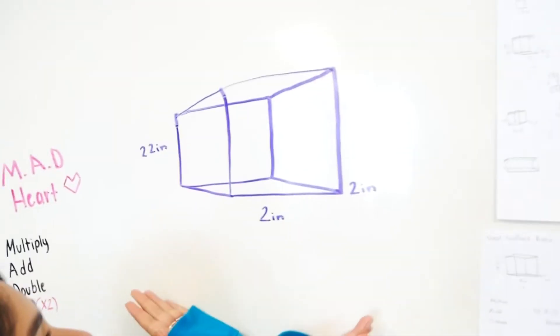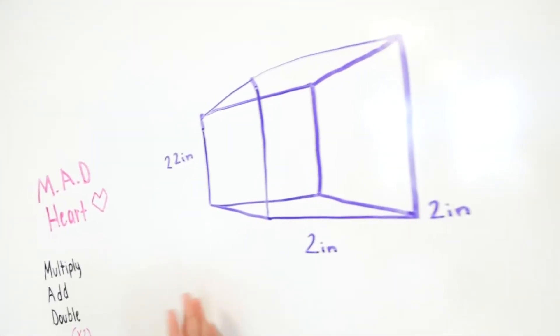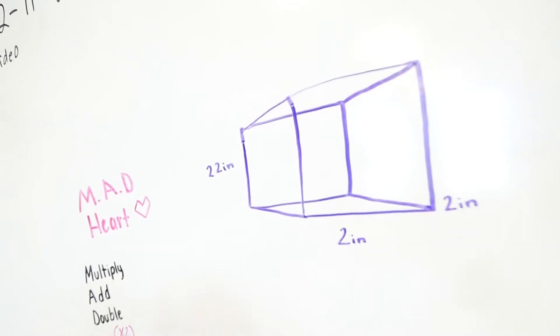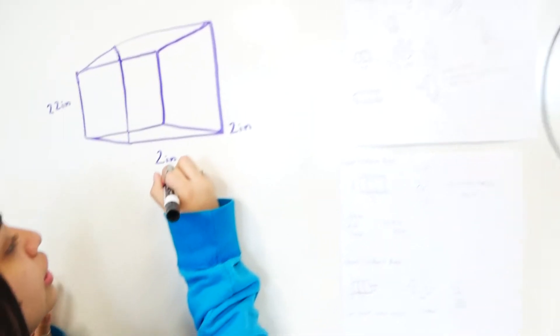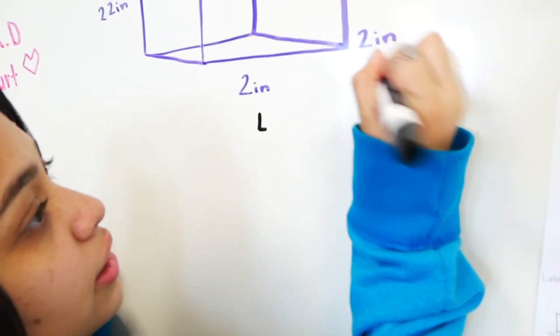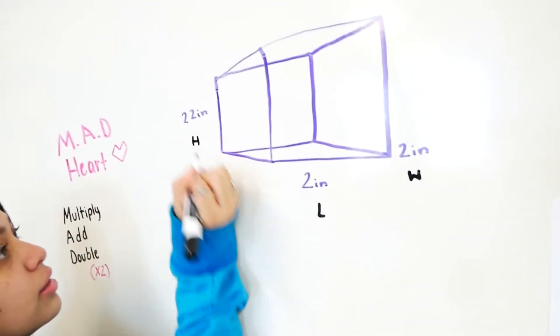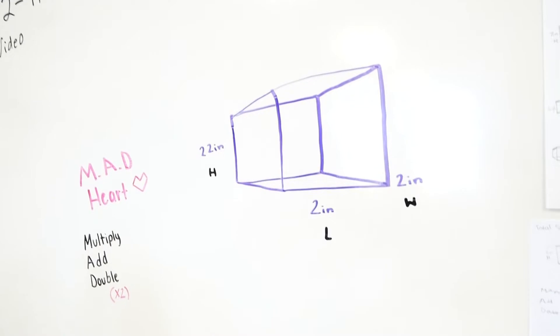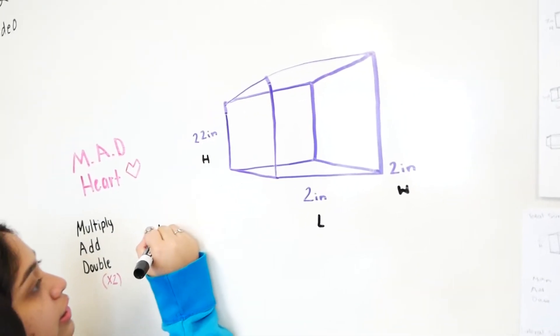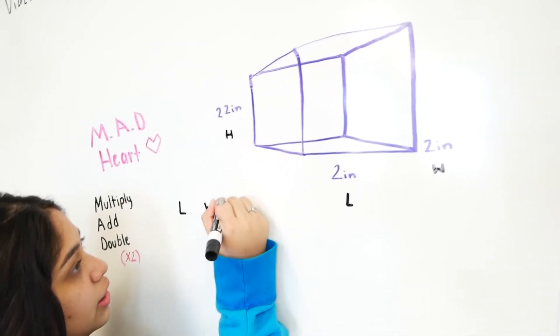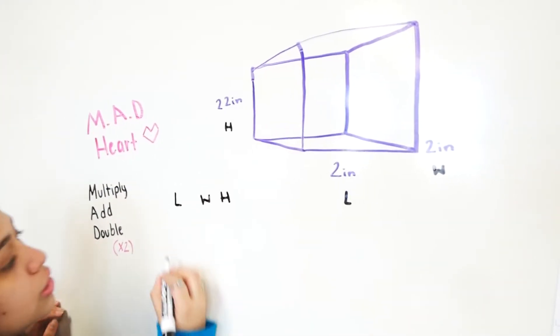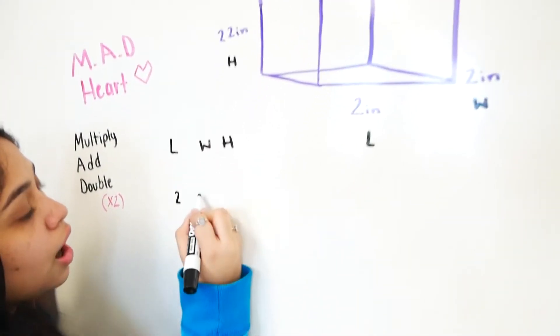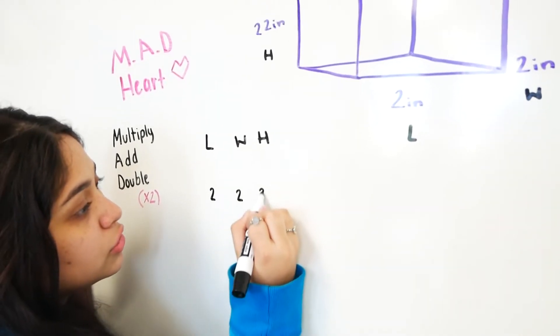Over here I have my problem. So what I would do is length, width, and height. So now you're going to take your length, your width, and your height. And you are going to do 2, 2, 22.